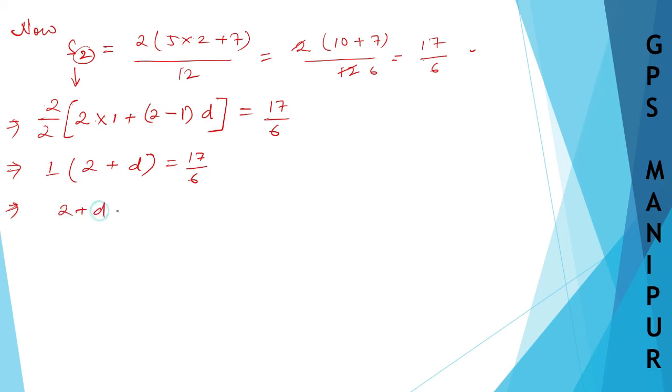2 plus D is equal to 17 by 6. I need to find the value of D. So, what shall I do? D is equal to 17 by 6 plus 2.